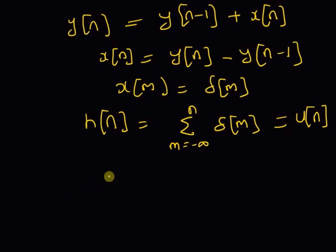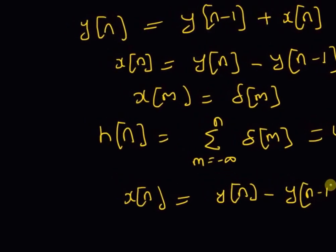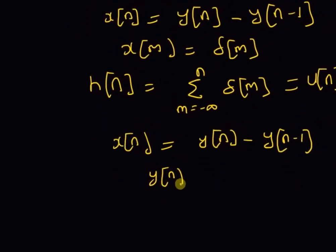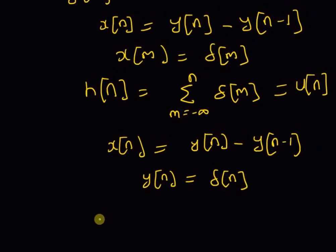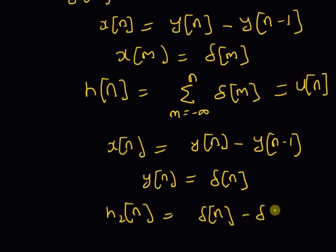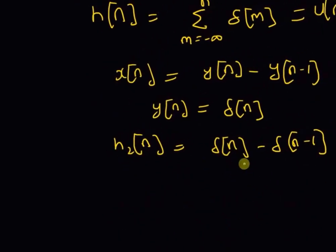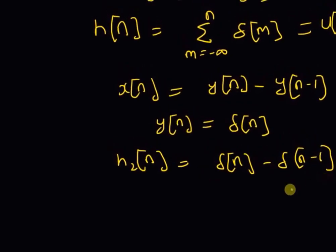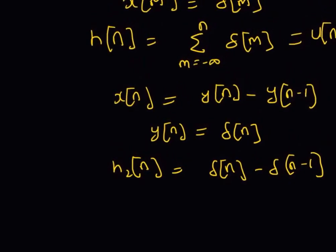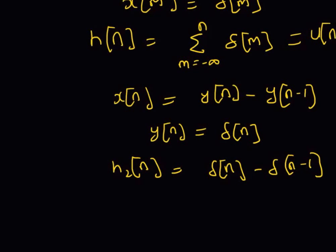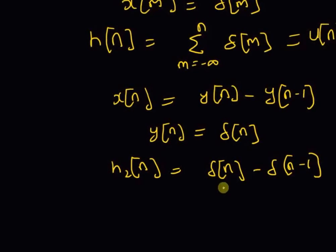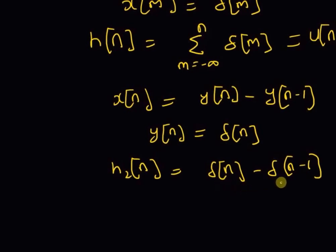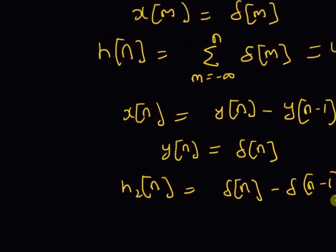For the inverse system, x(n) equals y(n) minus y(n-1). Using y(n) equal to delta(n), the impulse response of the inverse system is h2(n) equal to delta(n) minus delta(n-1). This difference equals 1 for n equal to 0, and minus 1 for n equal to 1. Therefore, the impulse response of the inverse system is delta(n) minus delta(n-1), which is the unit impulse shifted by one value.